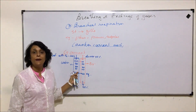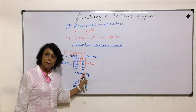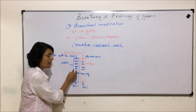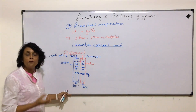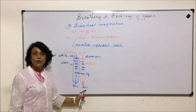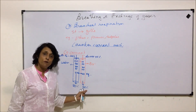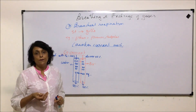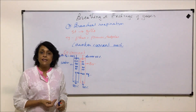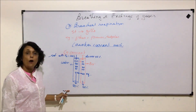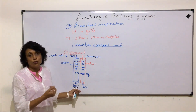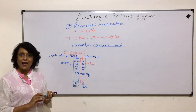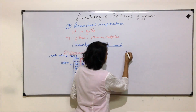Exchange of gases does take place between water and blood in co-current, but because equilibrium is reached, the water goes out with 50% oxygen. In other words, the blood is able to take only 50%. As we have seen, in water the oxygen content is already very less compared to air. If 50% of that cannot diffuse, it is not an effective mechanism — and that is why counter-current mechanism is considered the best adaptation.